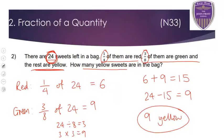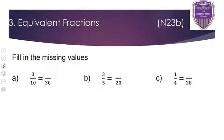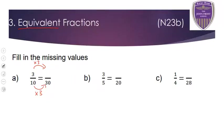For equivalent fractions, remember the first rule: whatever you do to the bottom, you do the same to the top. Equivalent just means equal to. For the first one, 10 has changed to 30 — 10 goes into 30 three times, so we're multiplying by 3. We multiply the denominator by 3, so we multiply the numerator by 3 as well — 3 times 3 is 9. So 3 tenths equals 9 thirtieths — they mean the same thing, worth the same amount.